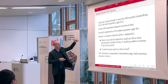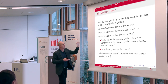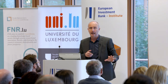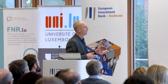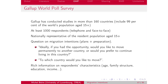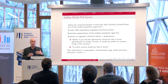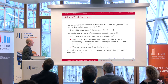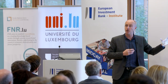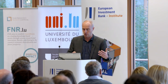Basically, they ask two key questions. The first is: ideally, if you had the opportunity, would you like to move permanently to another country, or would you prefer to continue living in your country? And then: if you want to move, to which country would you like to go? I'm going to show that we can exploit this rich source of information to shed some light on the question of self-selection factors.